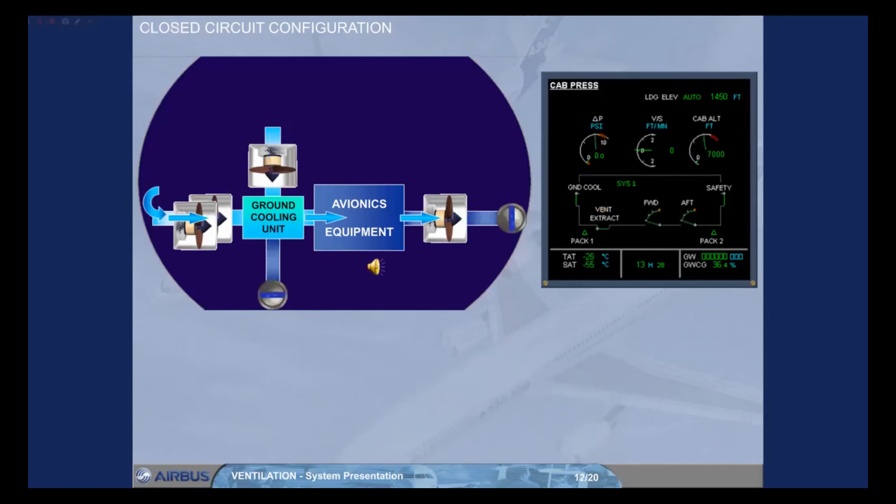On ground with all engines running, or on a 340-600 with engines 2 and 3 running, or in flight, the ground cooling unit and the fan are stopped. The ground cooling valve is closed.